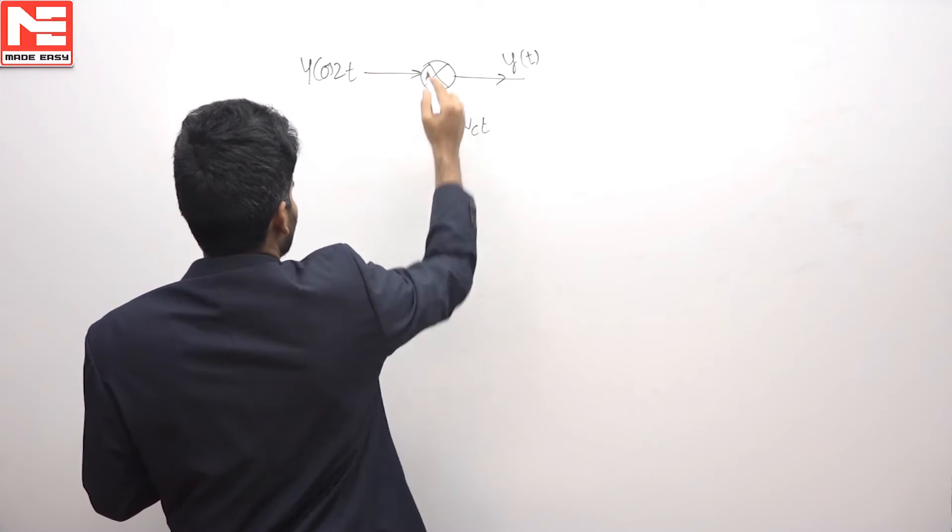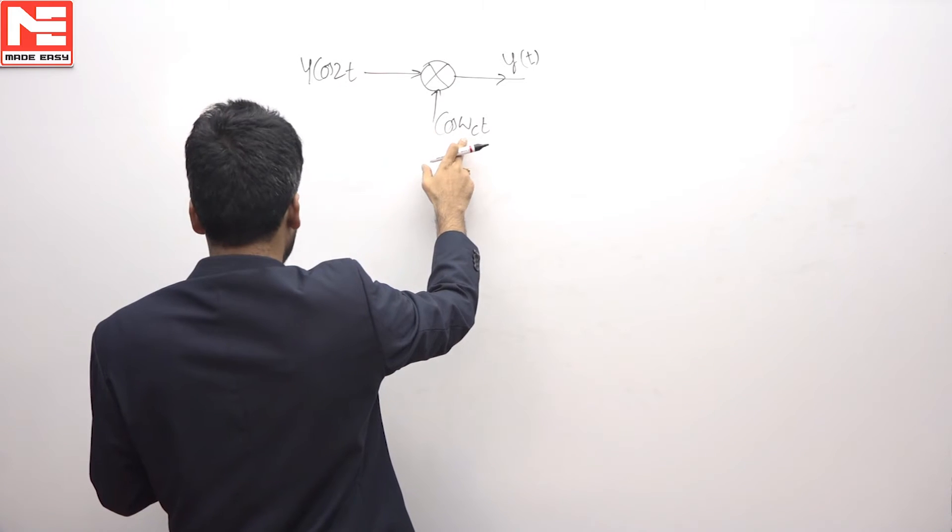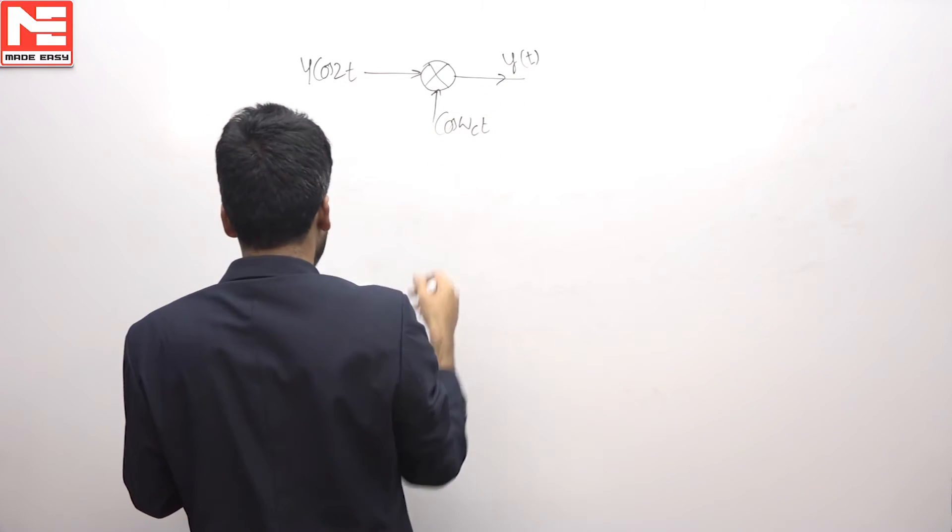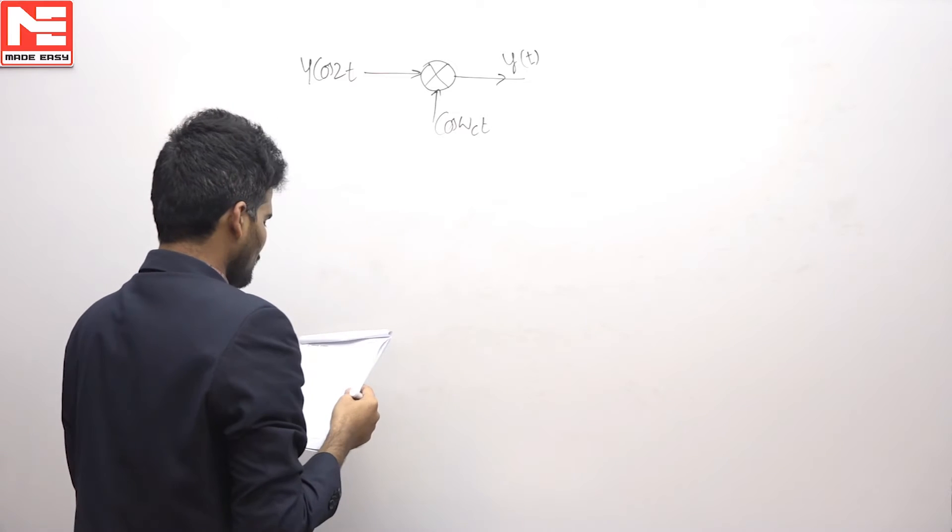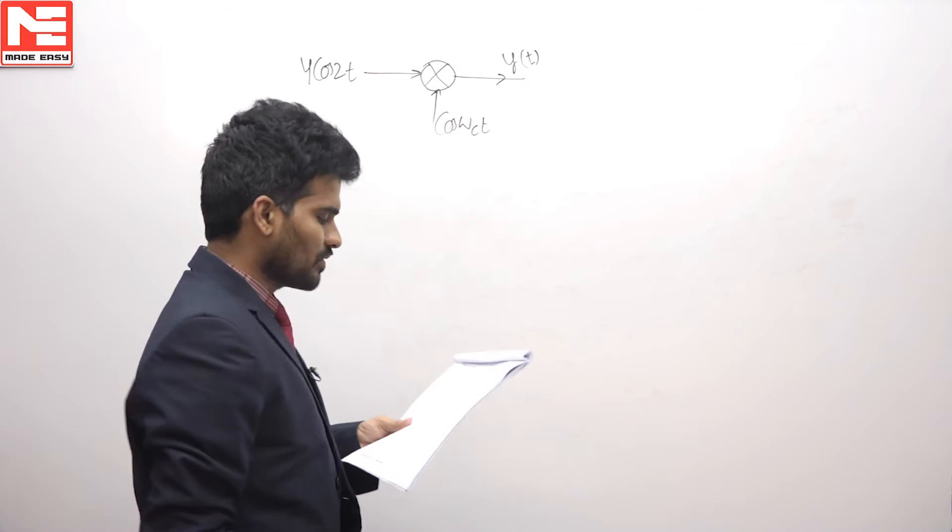Here the product modulator was given. The multiplier is 4 cos 2t and the input is cos ωct. The output is y(t), and we have to find the complex envelope of this resulting bandpass signal y(t).